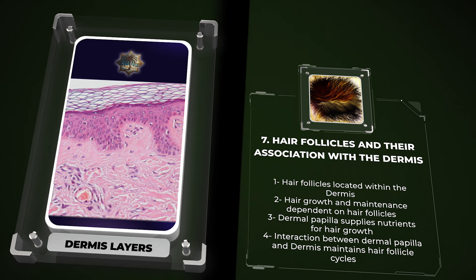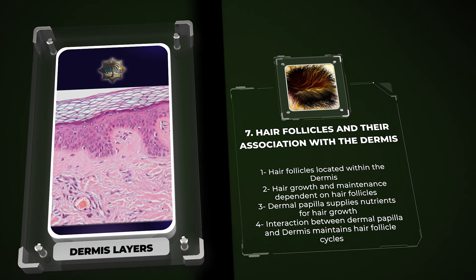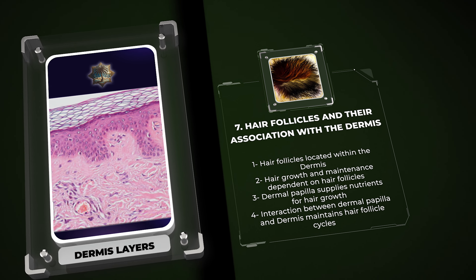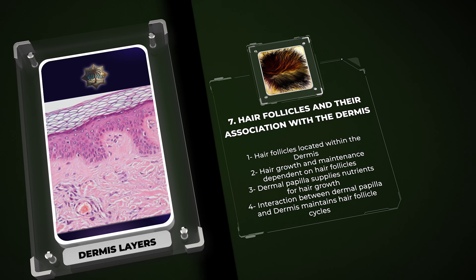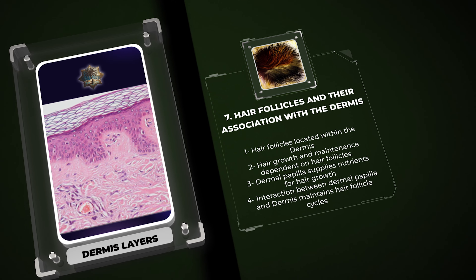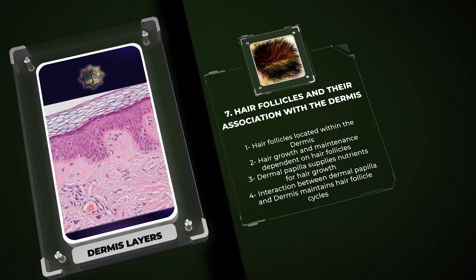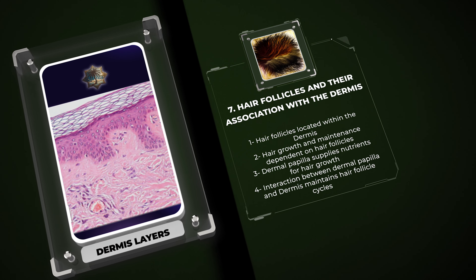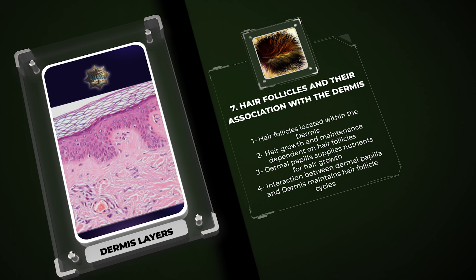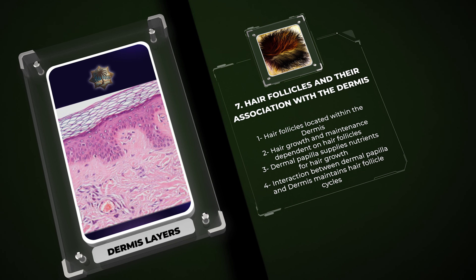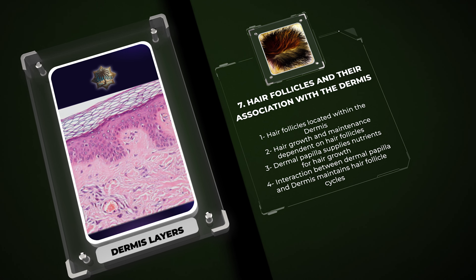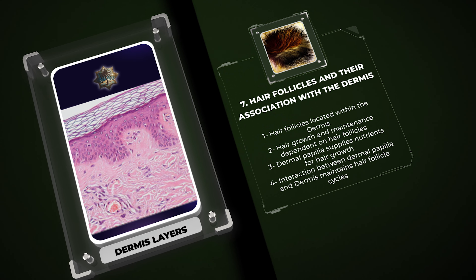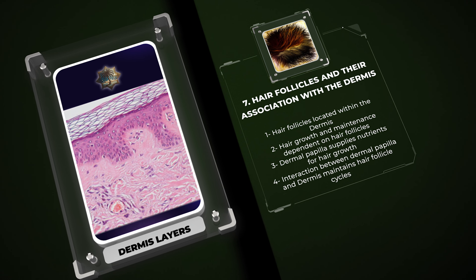The dermal papilla, located at the base of the hair follicle, supplies nutrients and signaling molecules necessary for hair growth. The interaction between the dermal papilla and the surrounding dermis ensures the continuous cycles of hair growth, rest, and shedding, maintaining the functionality of hair follicles.